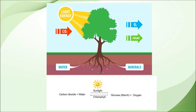Carbon dioxide is obtained from the atmosphere through stomata, and water is absorbed by the roots from the soil. Sunlight is natural and chlorophyll is present in the leaf itself. Photosynthesis can be expressed as: carbon dioxide plus water, under sunlight and in the presence of chlorophyll, converts into glucose and starch plus oxygen.